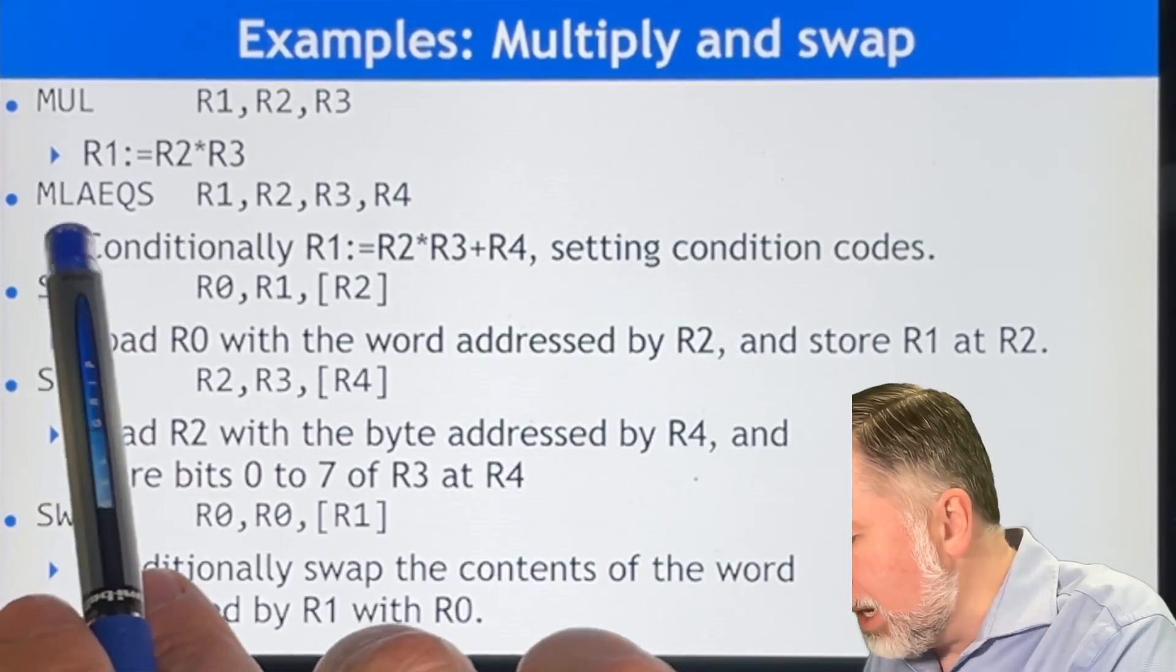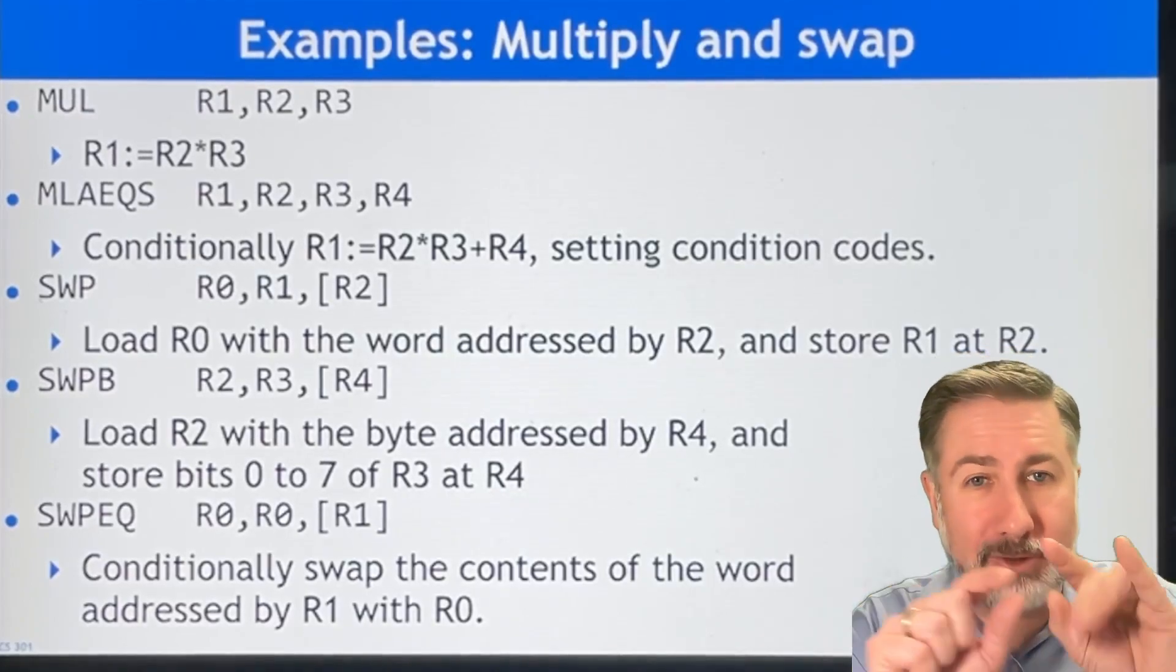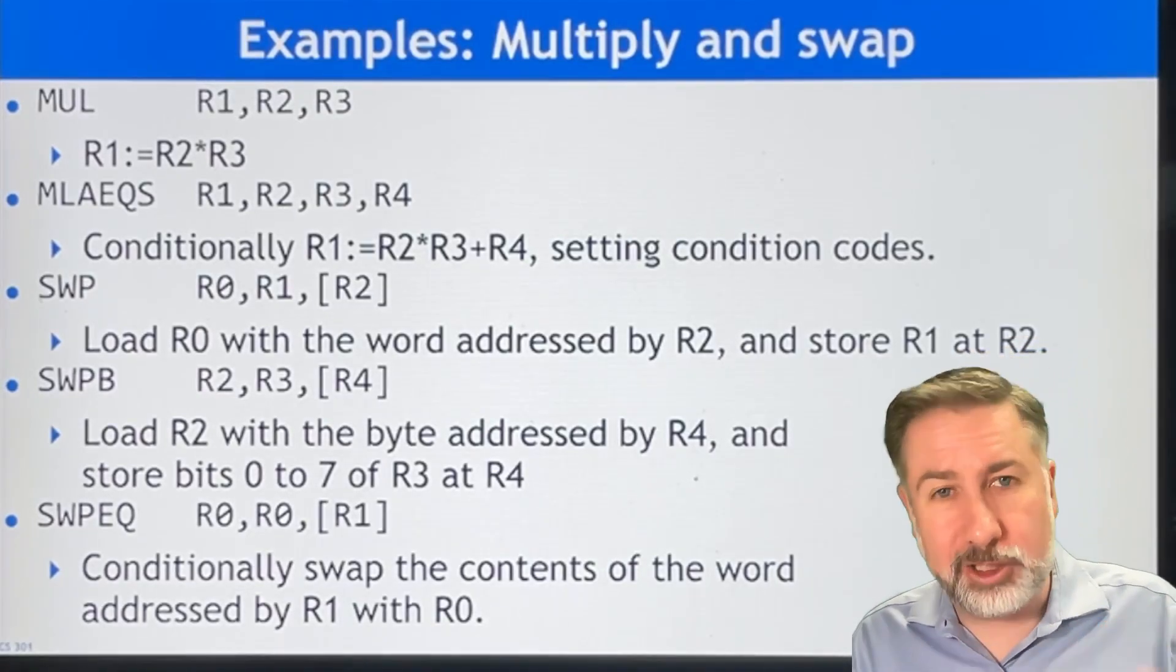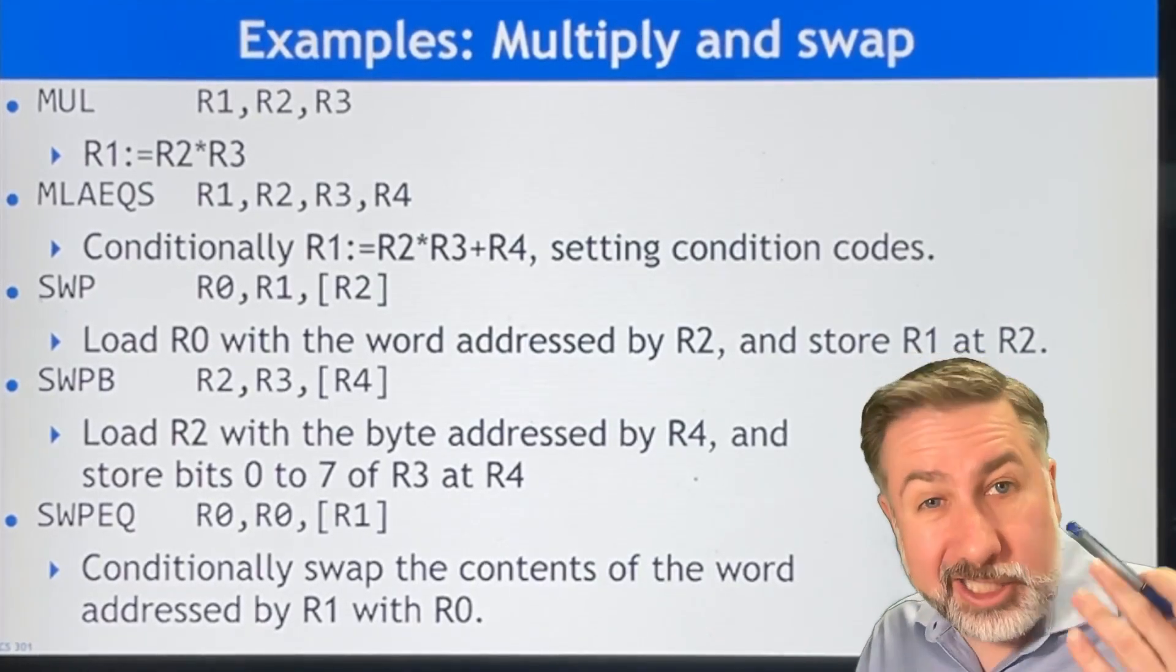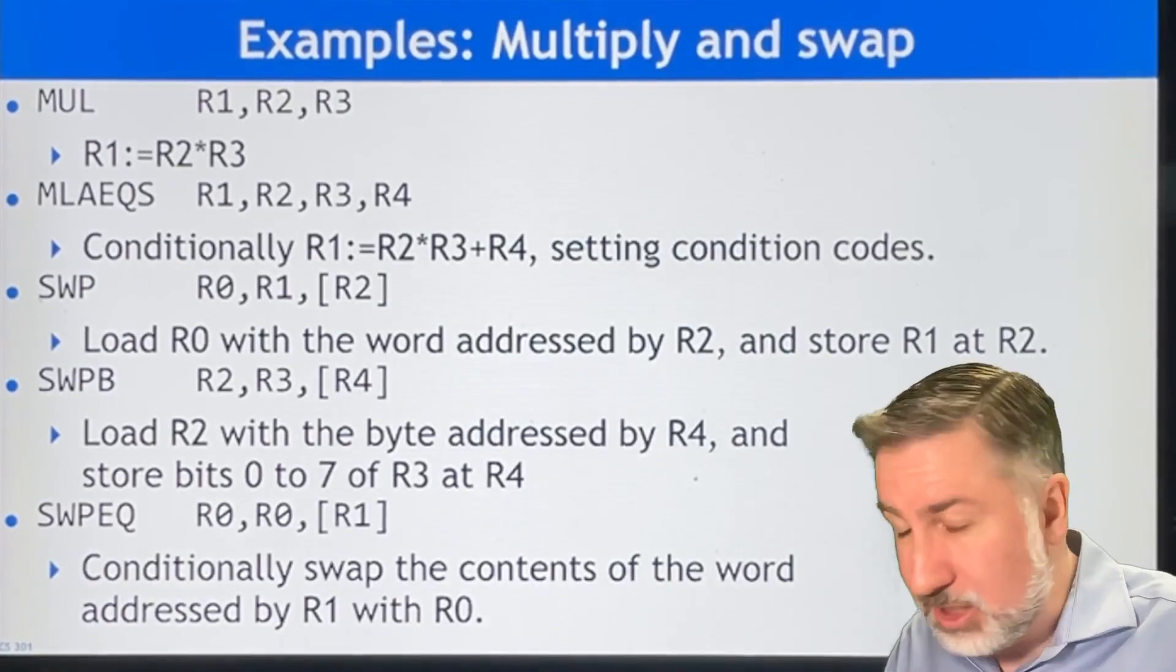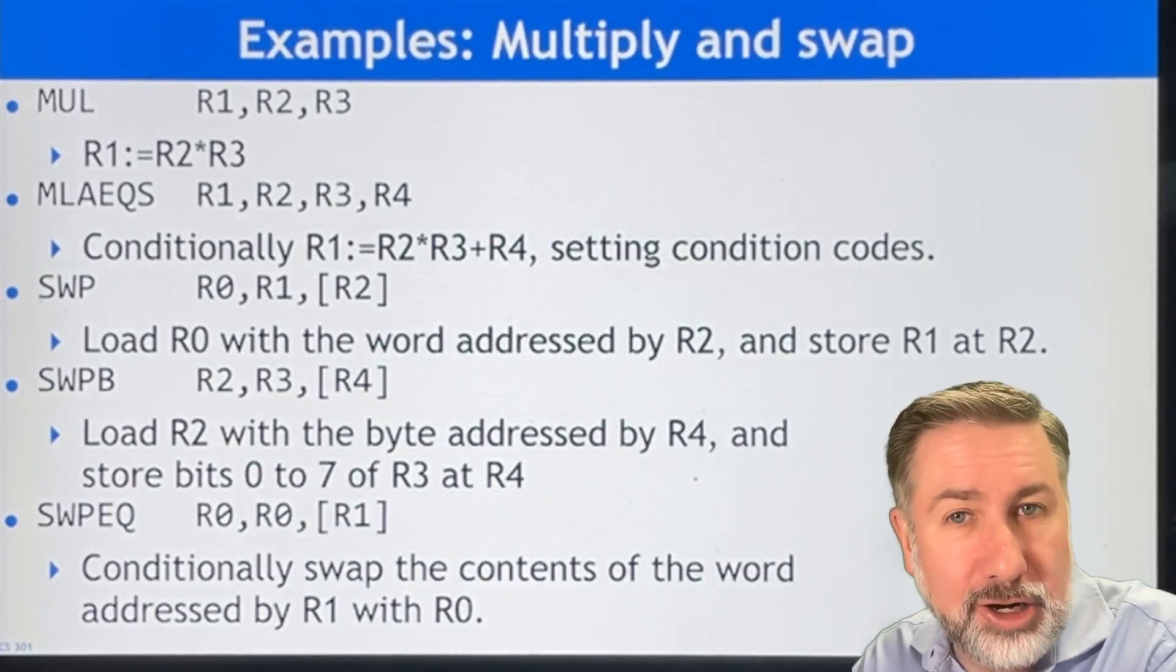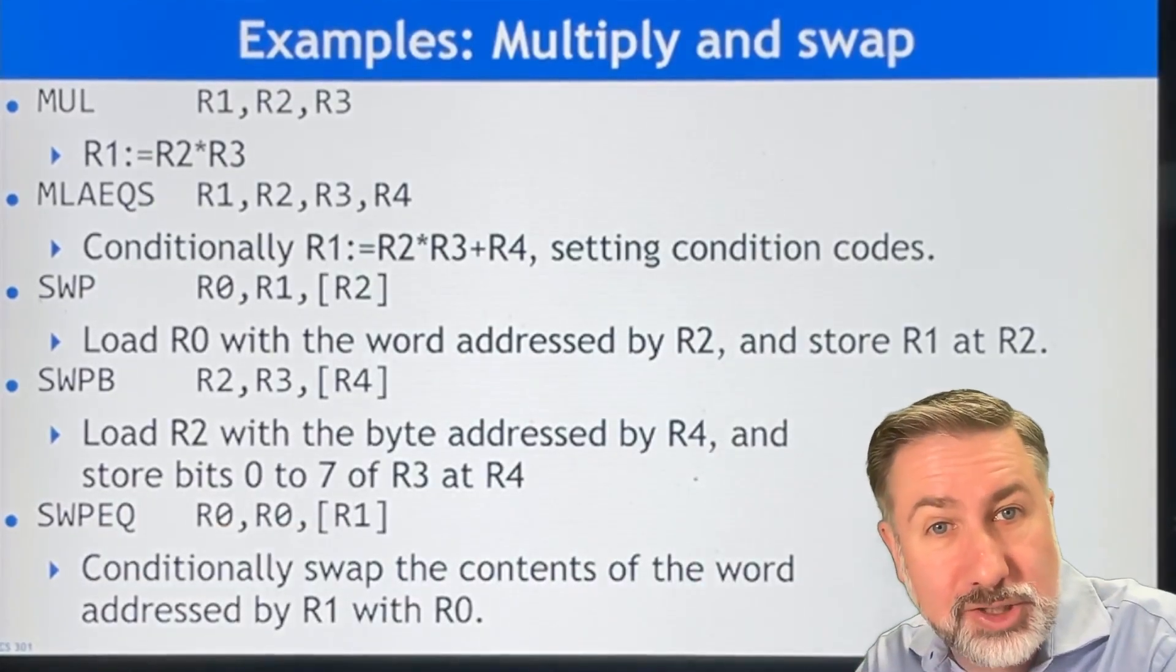MLAEQS. This is multiply and accumulate. So this is multiply two numbers and add the result to a third number. This is, as it turns out, a very common operation. Multiply-accumulate. And so this is baked into ARM. So multiply and accumulate conditionally on the previous instruction being equal or Z equals zero. And so what you do is you multiply R2 and R3 together and then you add the result to R4.